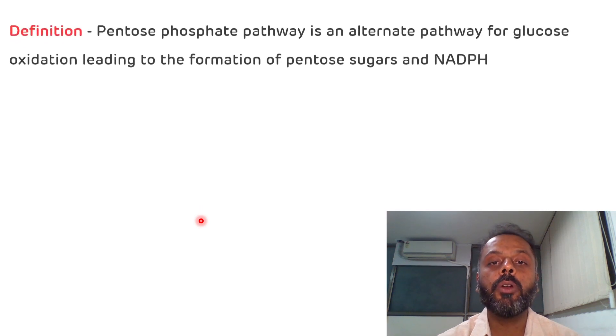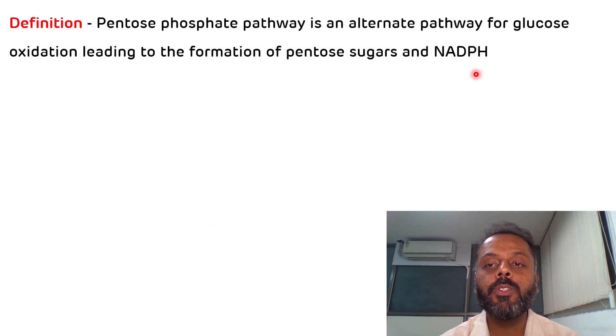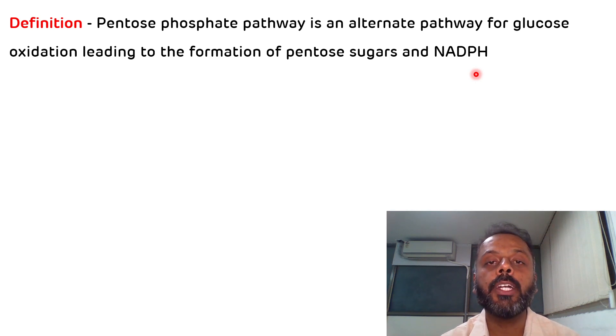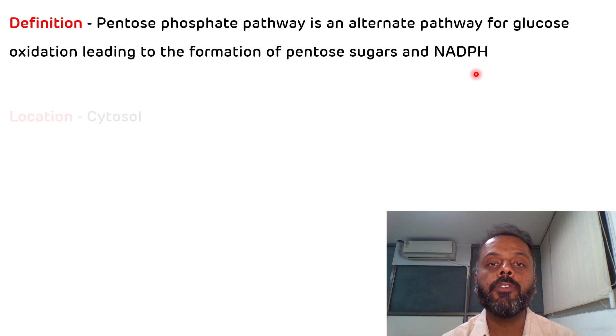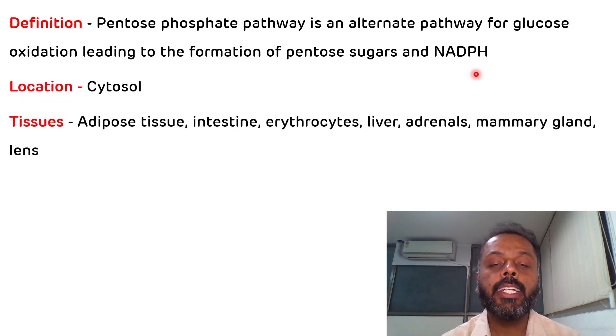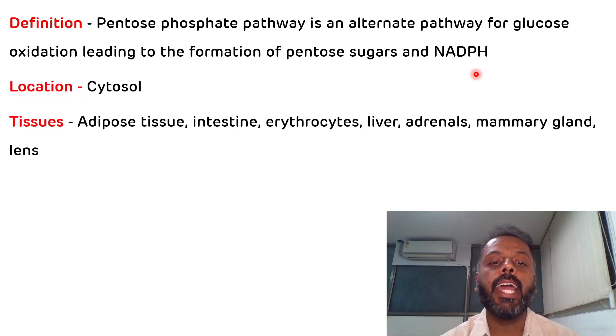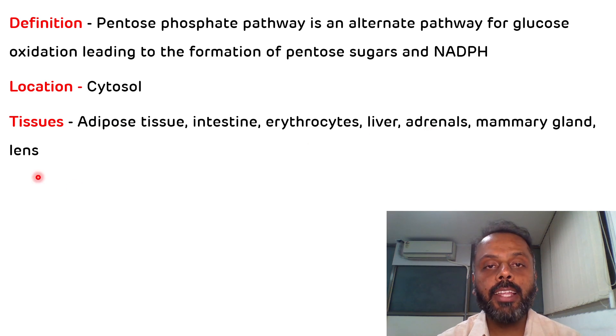The definition of the HMP shunt pathway: it is an alternative pathway for the complete oxidation of glucose, apart from glycolysis and the TCA cycle. It is concerned with the production of pentose sugars as well as NADPH. The site for the HMP shunt pathway is the cytosol. This pathway is operational in various tissues like lactating mammary gland, intestine, adipose tissues, erythrocytes, and the lens of the eye.